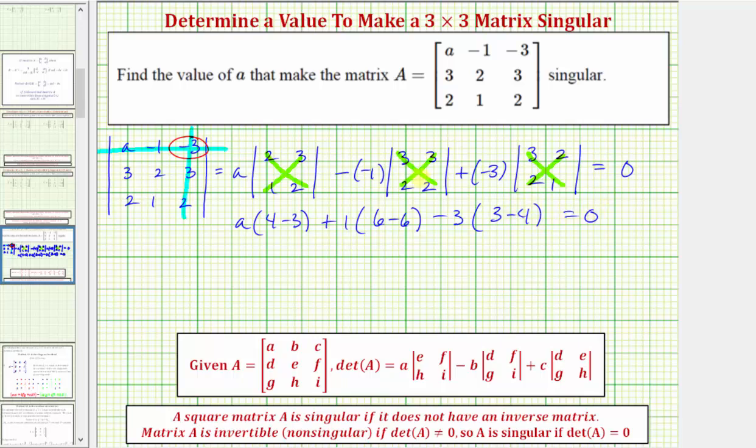Equals zero. So simplifying again, we have A plus, this is one times zero, that's zero. And here we have negative three times negative one, which is positive three. Equals zero.